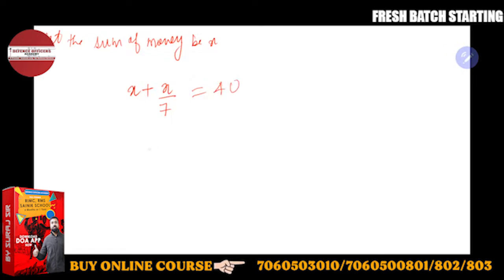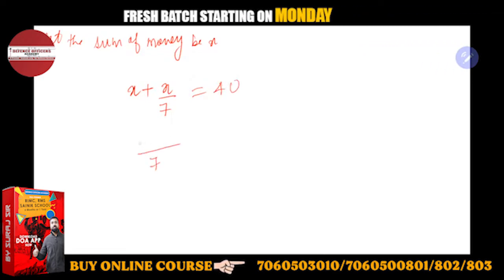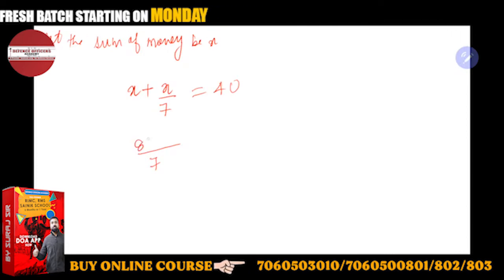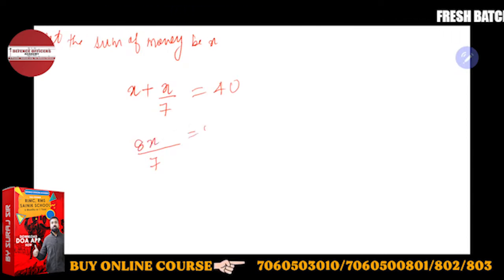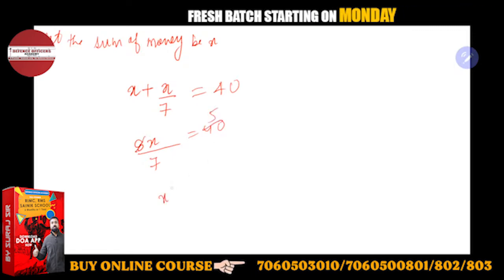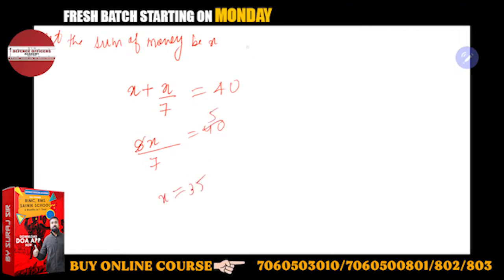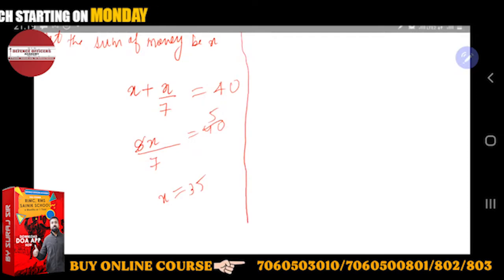The LCM will be 7, and this will be 8x. 7x plus x equals 8x, which is equal to 40. 8 times 5, so x is equal to 35. Very simple question.